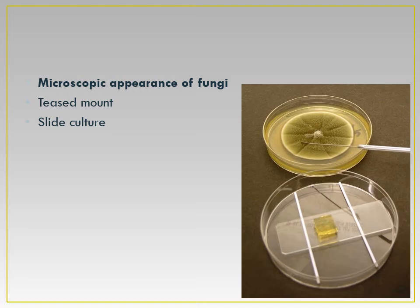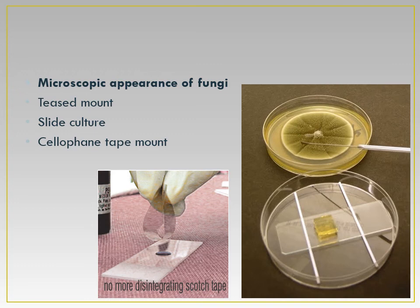For slide culture, a sterile slide is placed on a bent glass rod in a sterile petri dish. Two square agar blocks of one centimeter square are placed on the slide, and bits of the fungal colony are inoculated into the margins of the agar block. A cover slip is placed on the agar block and the petri dish is incubated at 25°C. After sufficient growth, LPCB mounts are made from both the coverslip and the slide.